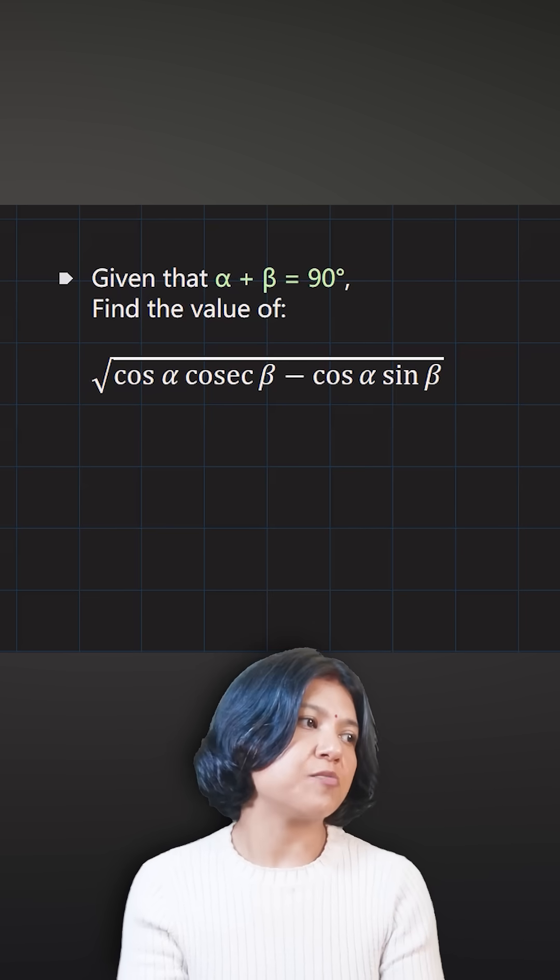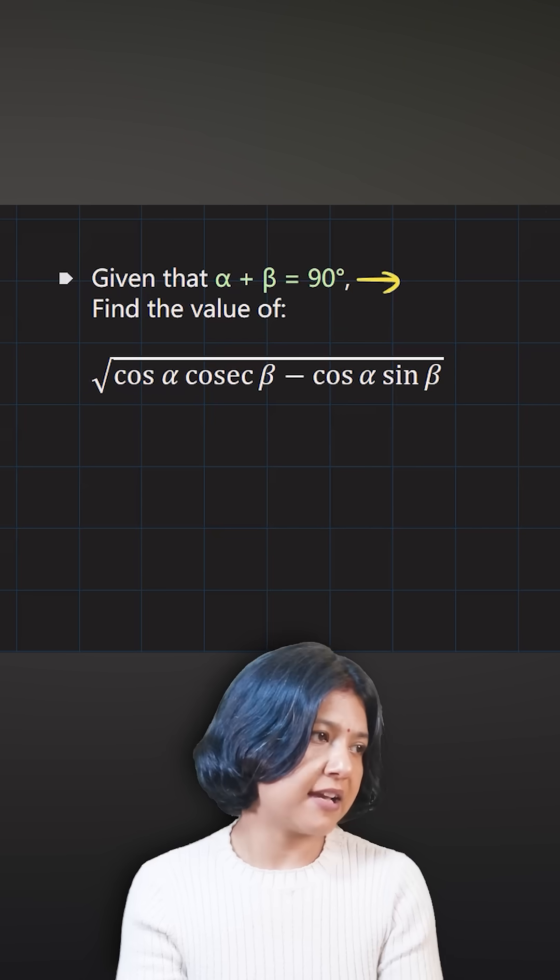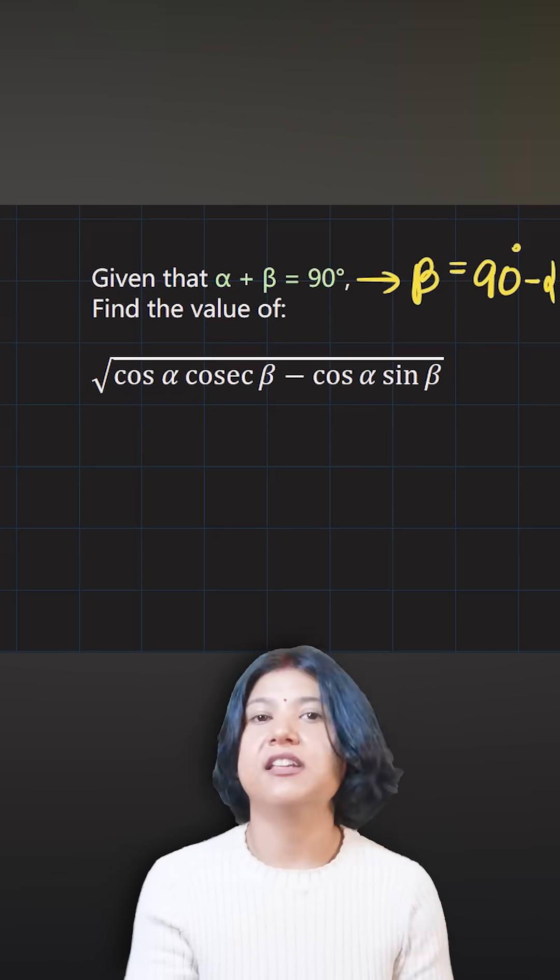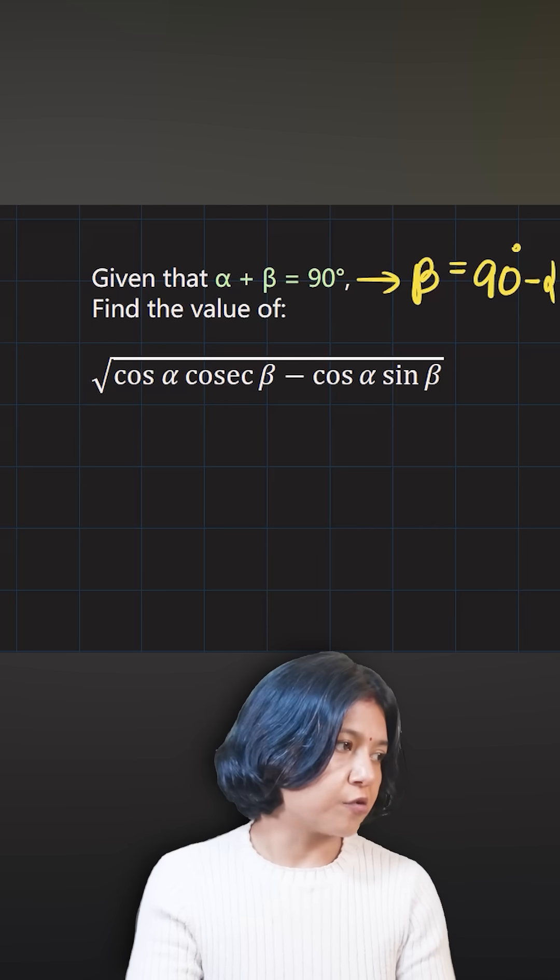Alpha plus beta equals 90 degrees, which means I can write beta as 90 minus alpha. This will be very helpful. We want to evaluate this expression under the root.